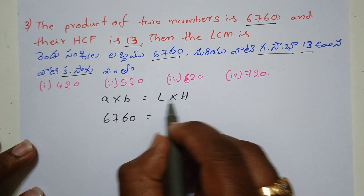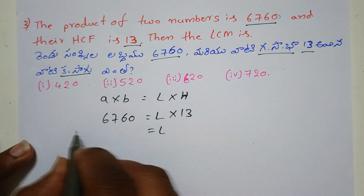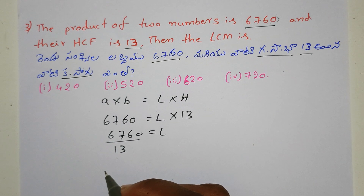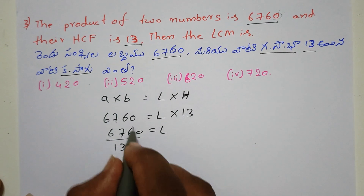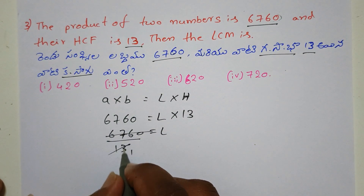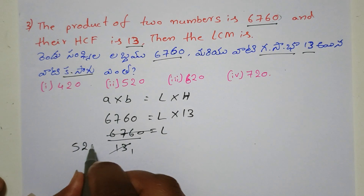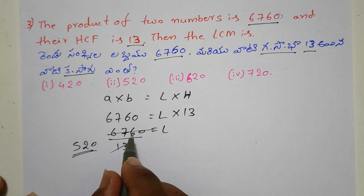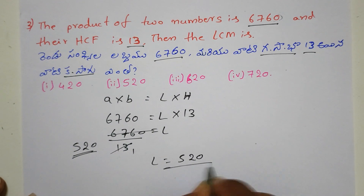This is the LCM. The HCF is 13. So 6760 divided by 13 gives us the LCM. The answer is 520.